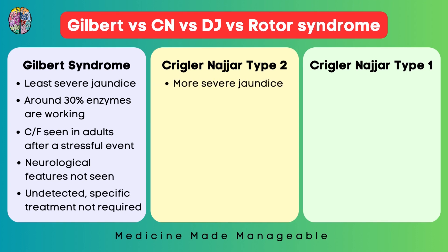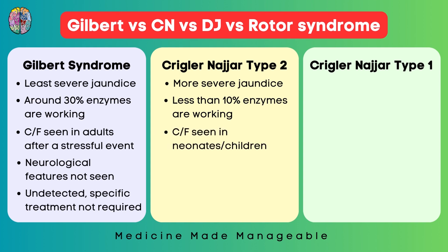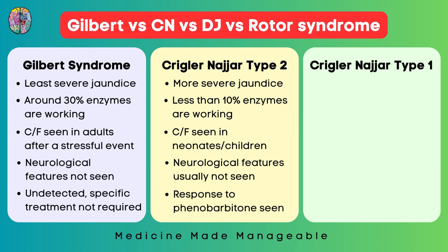Crigler-Najjar syndrome type 2 is more severe than Gilbert syndrome because less than 10% of enzymes are working. Clinical features are usually seen in neonates or children, but neurological features are typically not seen. Importantly, if we give phenobarbitone — an enzyme inducer — it will increase UGT1A1 levels, allowing unconjugated bilirubin to be converted to conjugated bilirubin and improving the patient's condition.